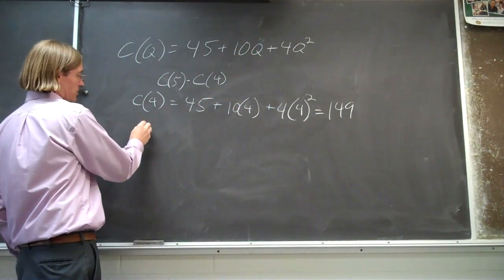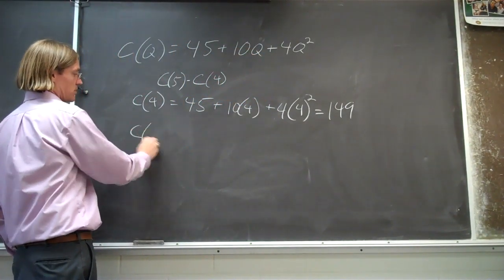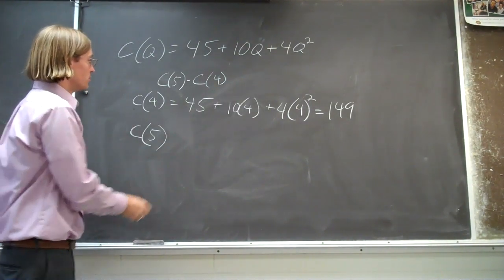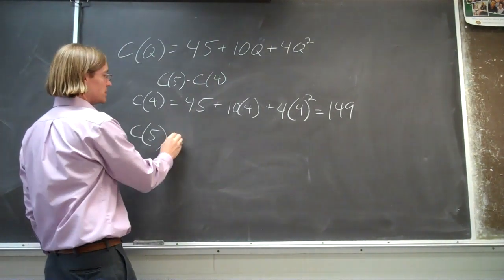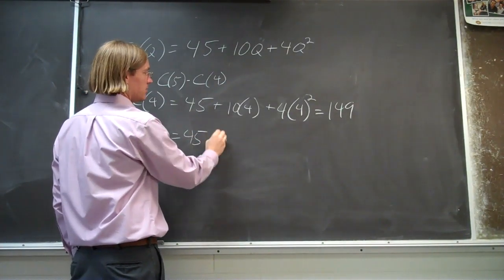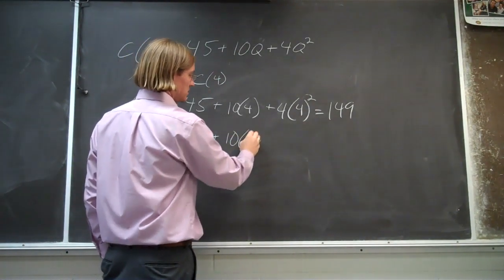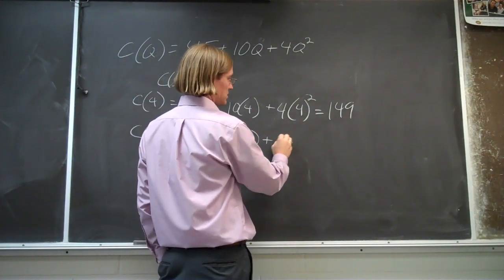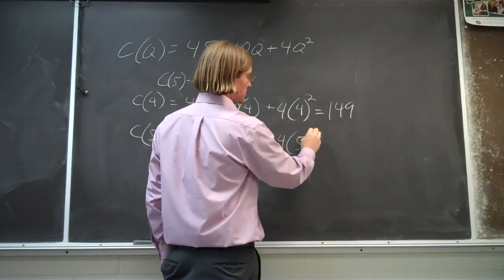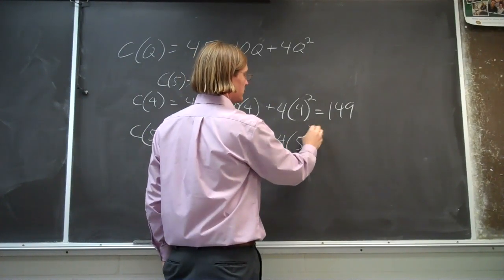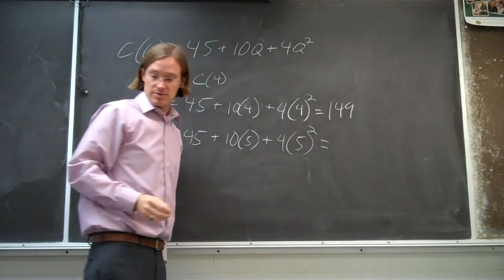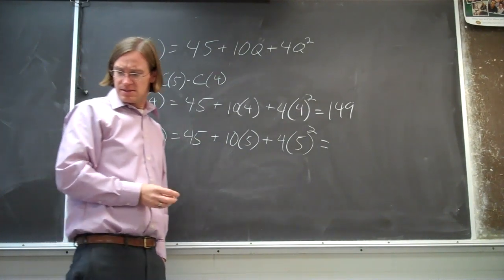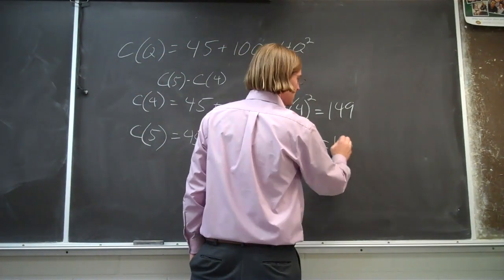Then we can figure out what's the cost of producing five units. The total cost of producing five units is going to be 45 plus 10 times 5 plus 4 times 5 squared, and off the top of my head, that is 195.